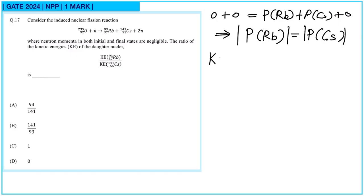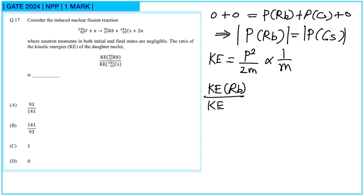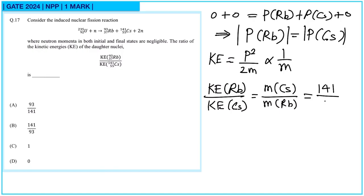Kinetic energy equals p-squared over 2m. Since p-squared is the same for both, it depends only on mass and is inversely proportional to mass. So kinetic energy of rubidium over kinetic energy of cesium equals the reciprocal of their masses — that is, mass of cesium over mass of rubidium, which is 141 over 93. So option B is correct.